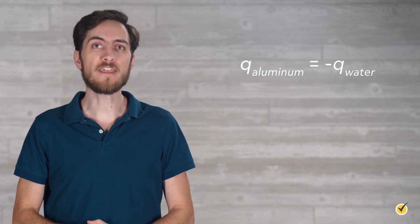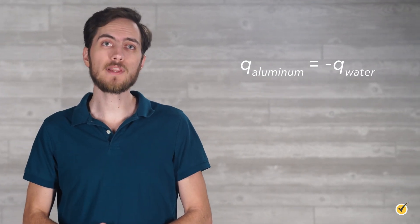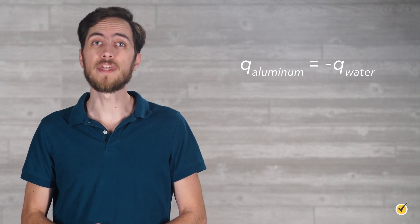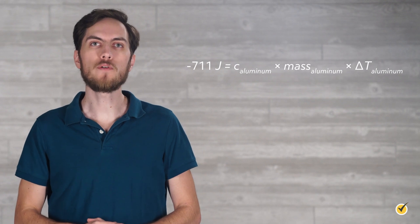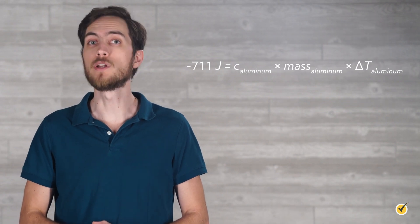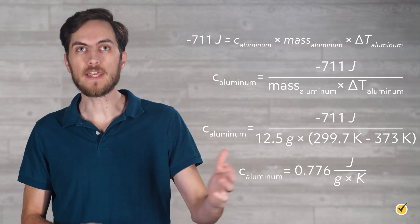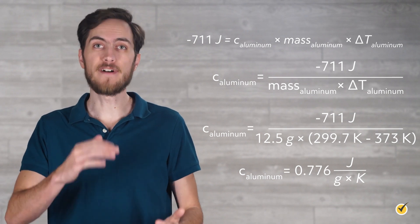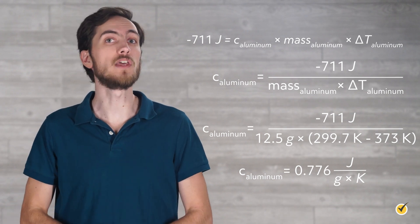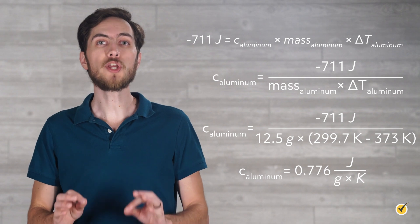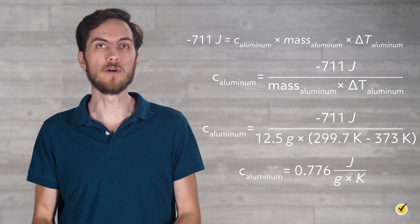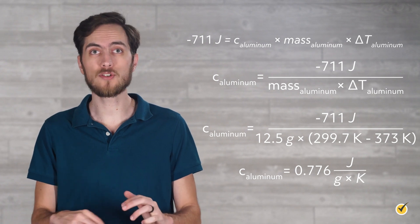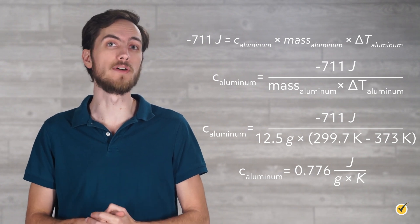We can represent this mathematically by saying that the heat released by the aluminum is equal to the negative of the heat absorbed by the water. Now we can set up an equation to solve for the specific heat capacity of aluminum, where it equals the negative of the heat absorbed by the water, divided by the mass and temperature change of the aluminum. Remember that change in temperature is always final minus initial, which for the aluminum gives us a negative value, and cancels out the negative for the 711 joules.